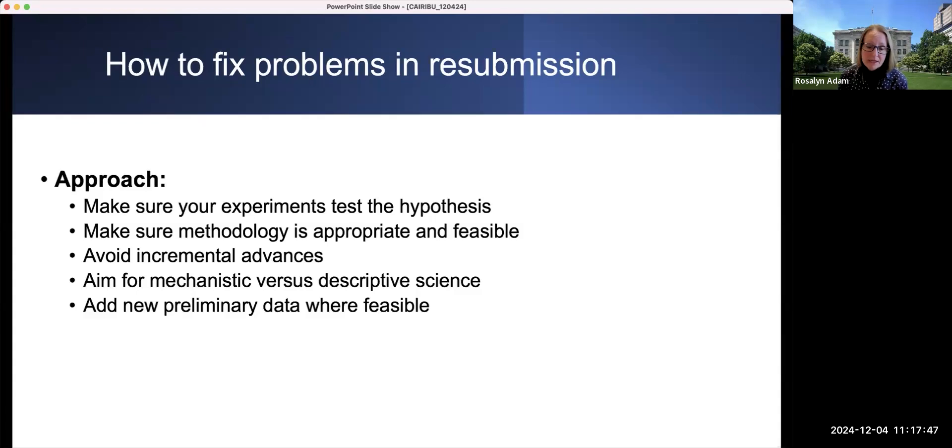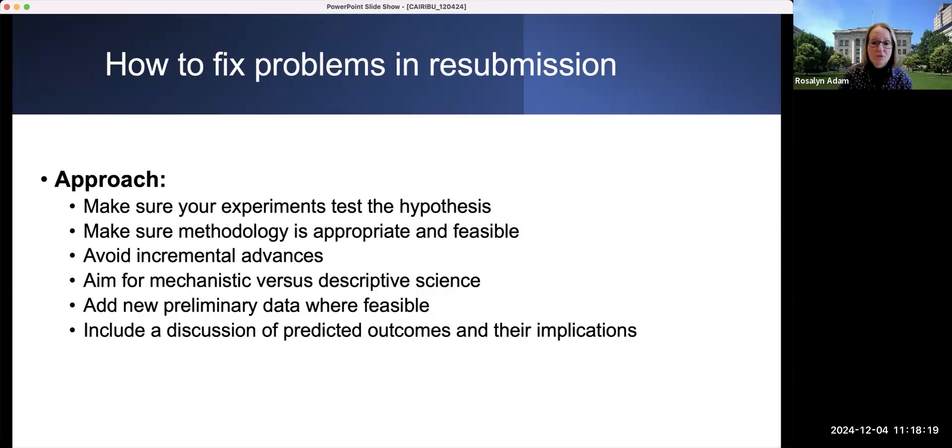You should add new preliminary data, and that can illustrate often feasibility with the technique, as well as underscoring your central hypothesis and rationale. You should include a discussion of predicted outcomes and their implications. It's really insufficient to simply say that everything that you predict is going to be true. You need to interpret the findings in light of your central hypothesis and whether indeed you generate data that supports or disproves your hypothesis. It's really important to address pitfalls and alternatives. Grant reviewers are researchers themselves and they know for specific techniques and approaches where the pitfalls are going to lie. And if you don't address those effectively, they will criticize you for potentially a lack of feasibility.